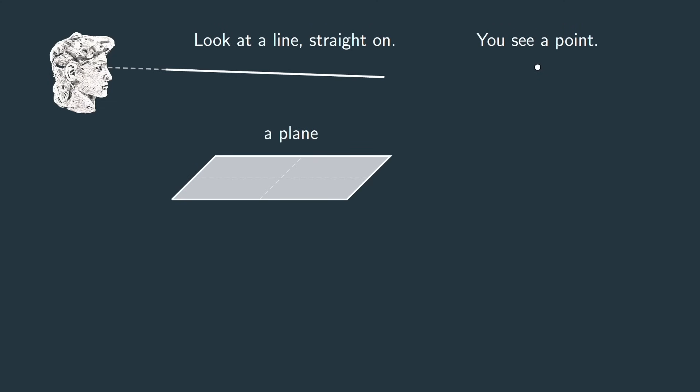Next, take a plane in space and look at that plane sideways. That plane appears to you as a line.